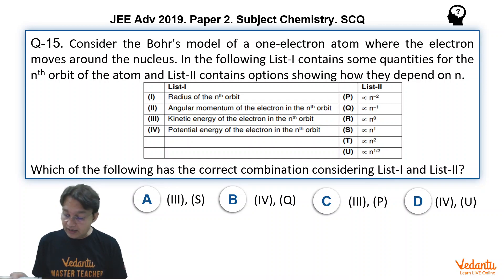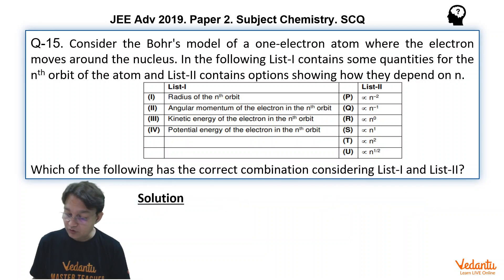So before you start let us discuss that radius of the nth orbit, angular momentum and kinetic energies, how they are dependent on n, the principle quantum number.